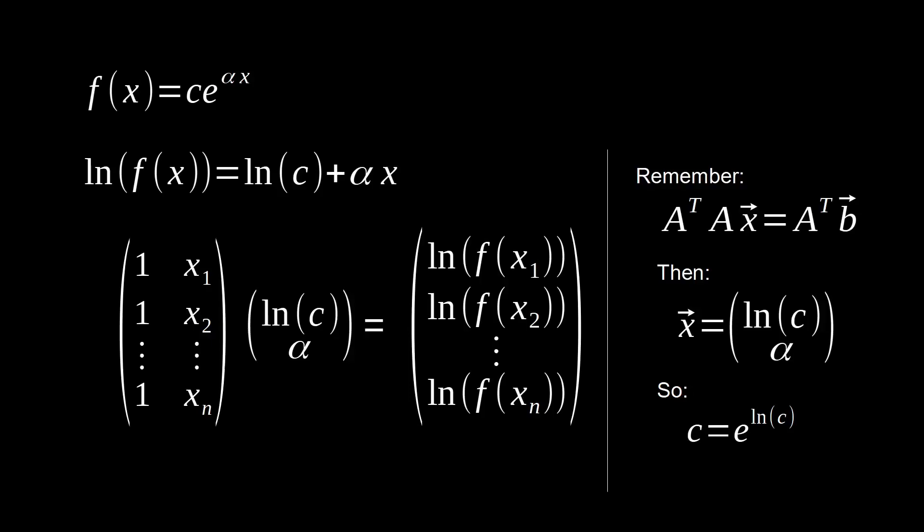But the point in showing you this is that if you choose a different function and you manipulate it such that it will fit in a Vandermonde matrix style linear system, there are going to be certain things you're going to need to account for. In this case it is our c coefficient and the fact that that c coefficient is now the natural log of c and we needed to re-exponentiate it.